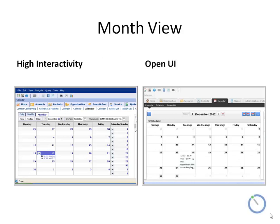The Month view in Open UI and High Interactivity is basically similar, with the exception that in Open UI, if you have a particularly long description, it bleeds into the following week, whereas in High Interactivity it is reduced and restricted in size.